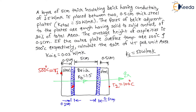In this 0.1 cm asperity region, air and brick are in parallel. For the rest — steel, brick, and steel — the resistances are in series. And in between, air and brick are in parallel.